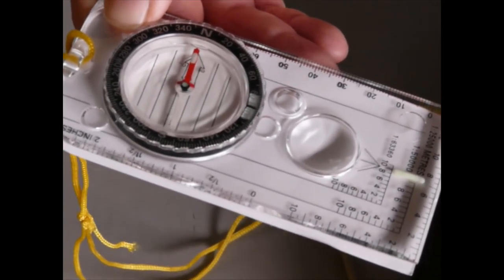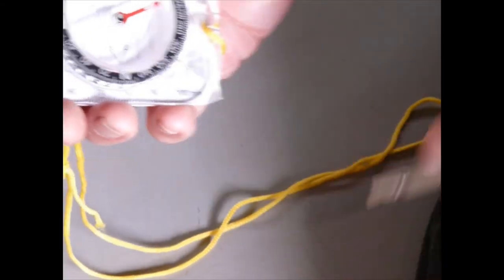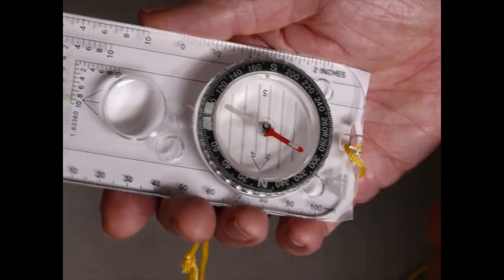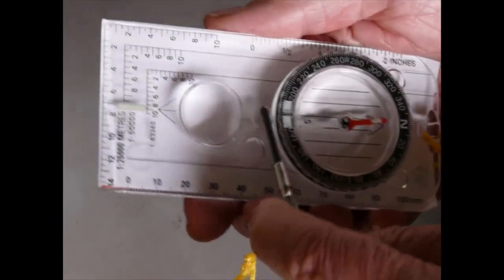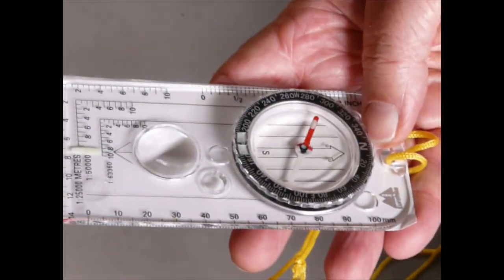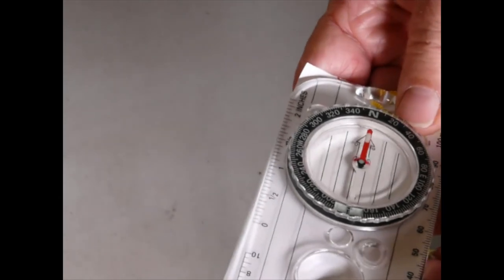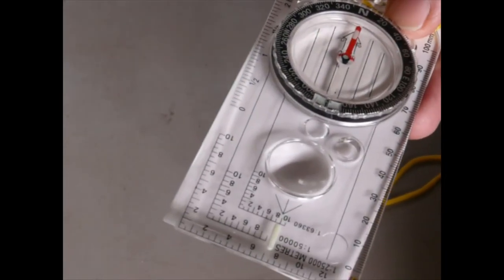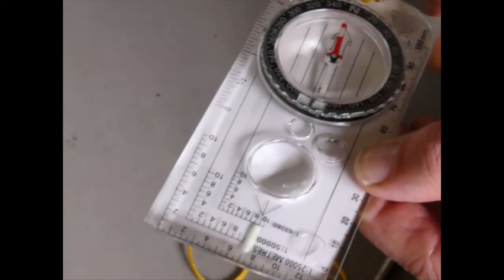Let's say we want to go south this time. So we find S on the disc. It's here. We move S to the top so the S sits opposite the arrow on the plastic. Hold the compass flat, turn until the red end of the needle in the disc points to the north. Now we know to walk in this direction, direction of south.